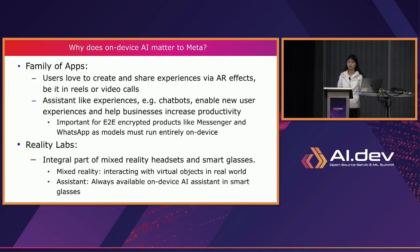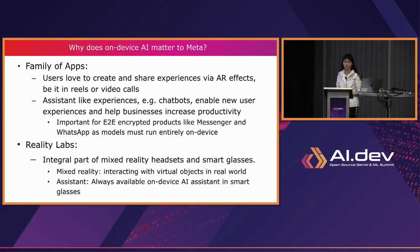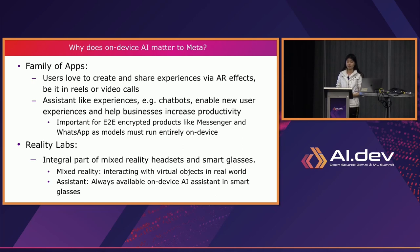For Meta, one important reason we care about on-device AI is our family of apps. Facebook and Instagram users are mostly on mobile devices and love to create and share experiences with AI effects — filters in Reels, video calls with background filtering and noise suppression. These are all super handy for users.